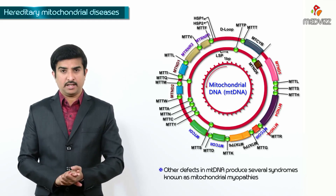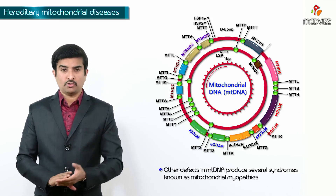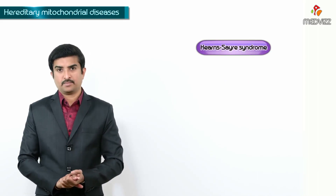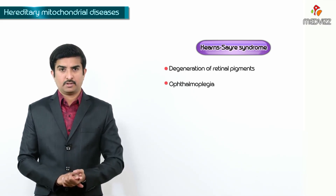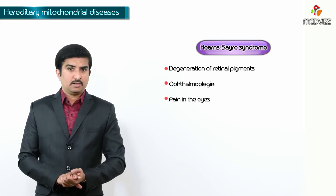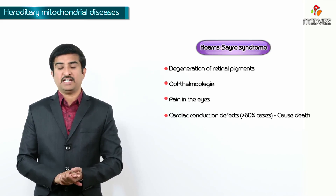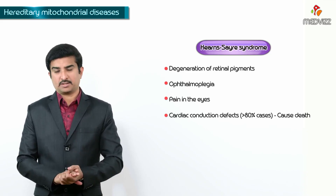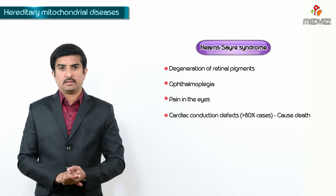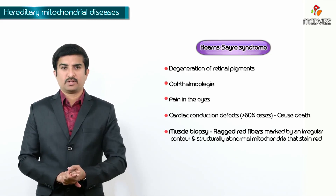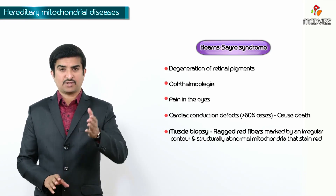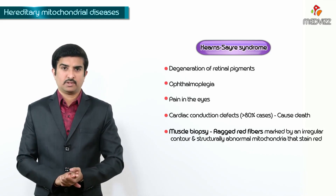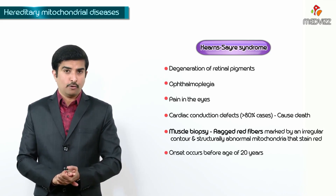Other defects in the mitochondrial DNA produce several syndromes known as mitochondrial myopathies. The first is Kearns-Sayre syndrome, which involves degeneration of the retinal pigments and ophthalmoplegia. More than 80% of patients suffer from cardiac conduction defects, which may cause death due to arrhythmias. Muscle biopsy reveals ragged red fibers, marked by an irregular contour and structurally abnormal mitochondria that stain red. This condition occurs before the age of 20 years.